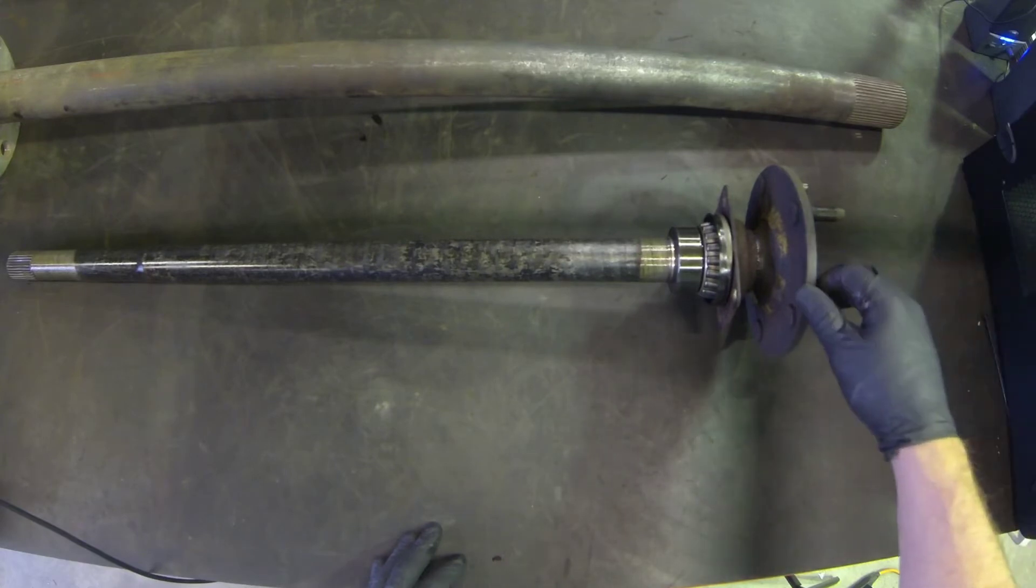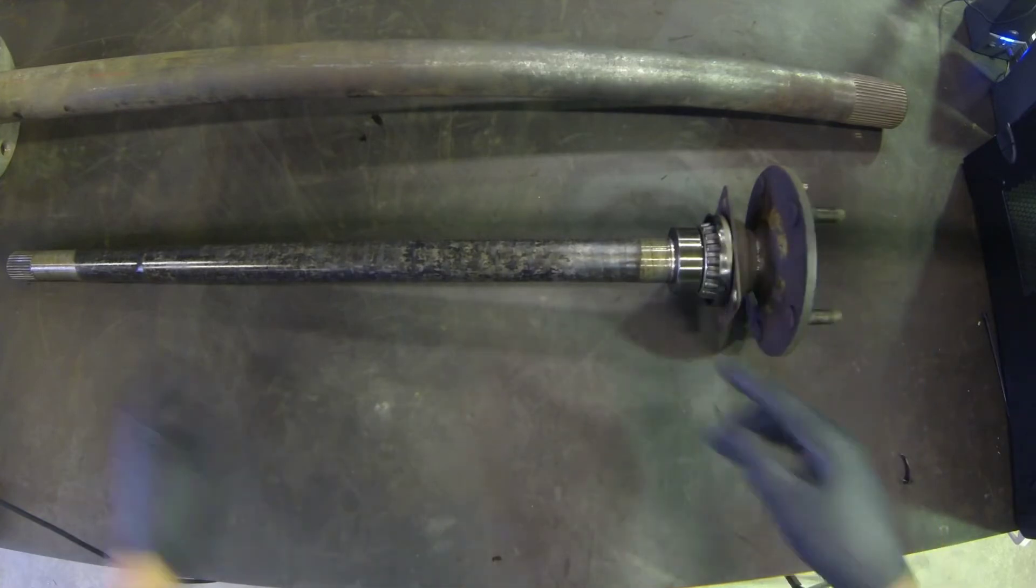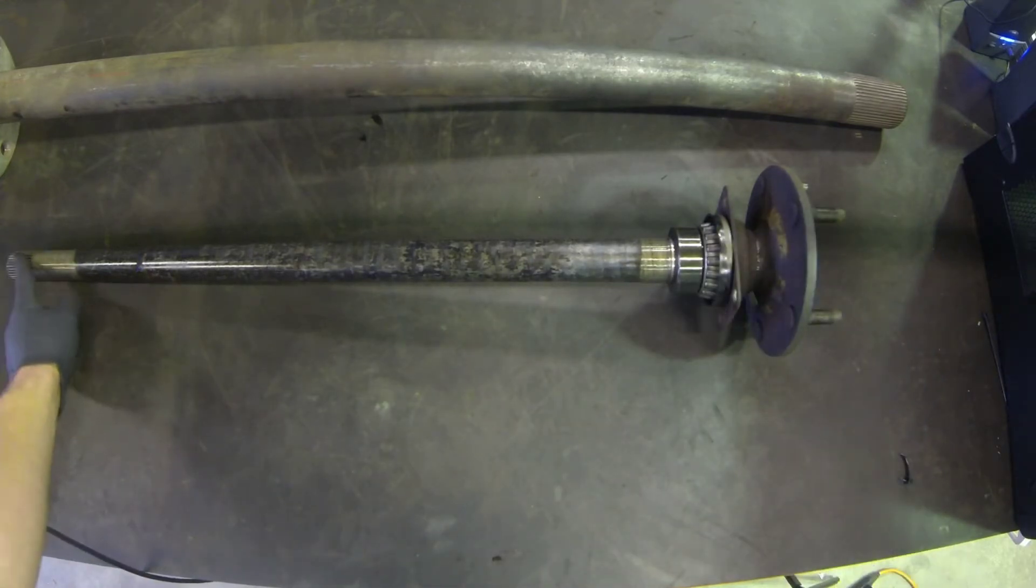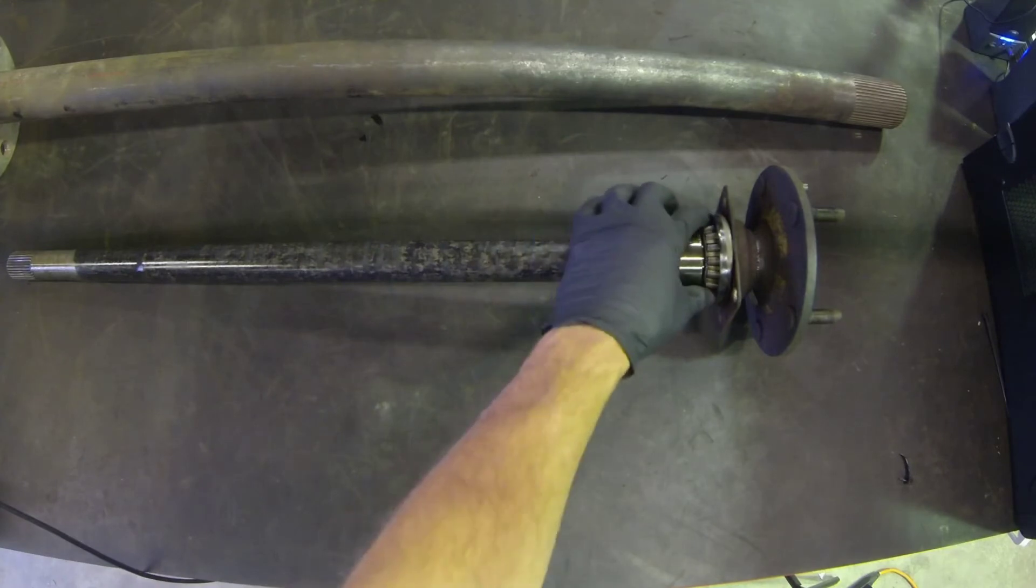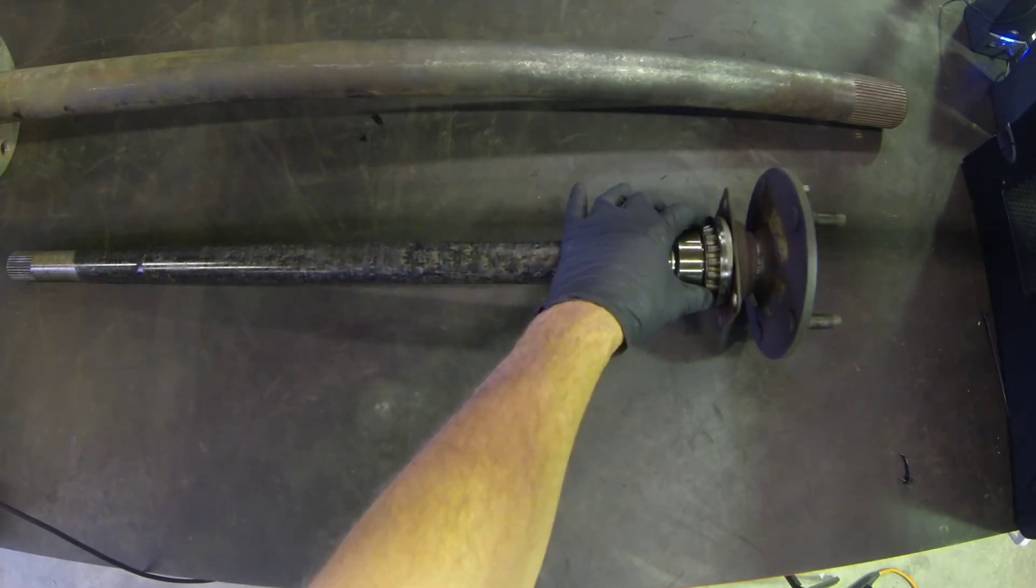This makes it a semi-floating axle design. It's semi, as in floating, only on one of the spline sets and supported by a wheel bearing on the other side.